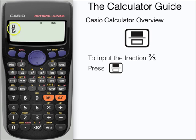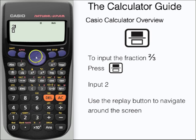We're going to input the fraction two-thirds. Notice how the cursor is located on the top level of the fraction. We can input two but we need to navigate our way to the bottom of the fraction and we can do that by using the central replay button. Press down and input your bottom number three.